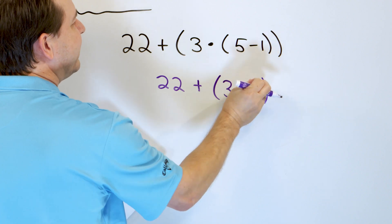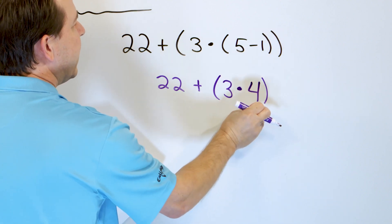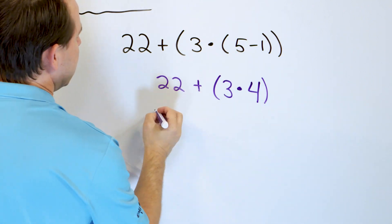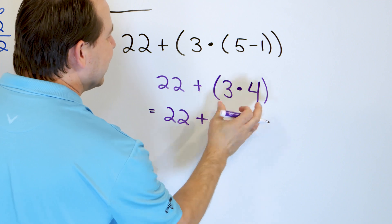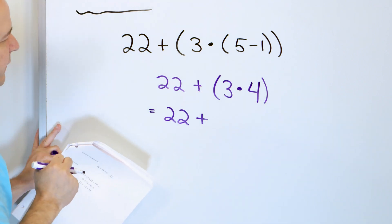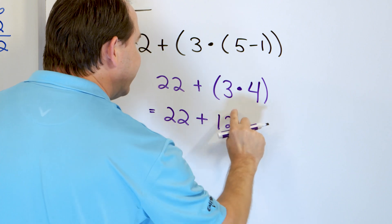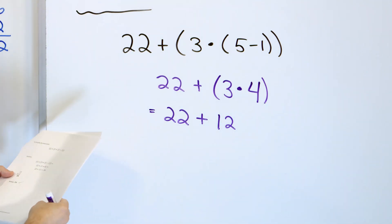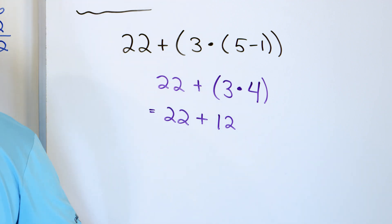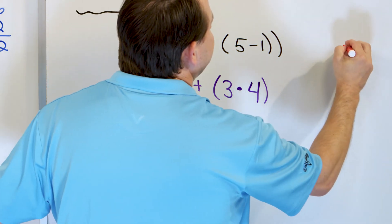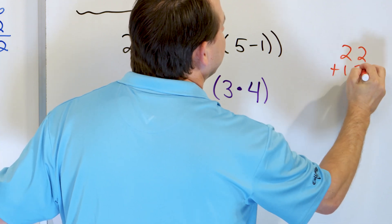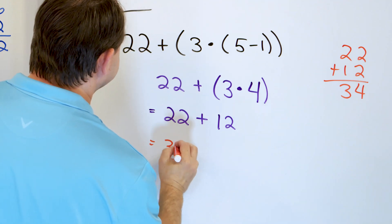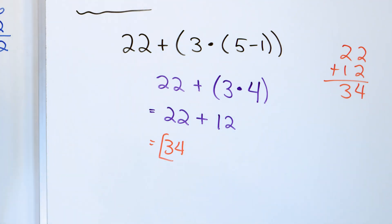All I've done is the subtraction here — 5 minus 1 equals 4 — and this remains the same inside the outer parentheses. Now I have to do what's inside of here: 3 times 4 is 12. I drop the parentheses after calculating. Now what is 22 plus 12? That's 34. And 34 is the final answer.